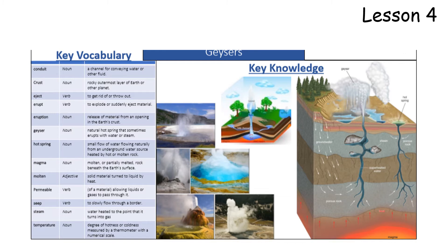You can remember back to our volcano lessons last week — a conduit is where the lava flows up through from the reservoir, up through the throat and mouth of the volcano to the vent. Quite similar for a geyser as well. Crust we know is the rocky outermost layer of the earth. Something that is ejected is thrown out or gotten rid of.